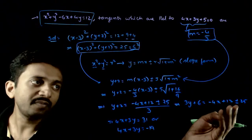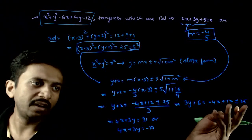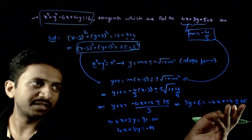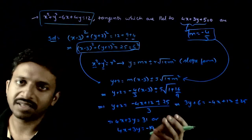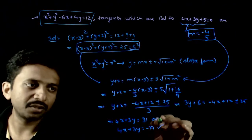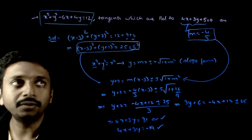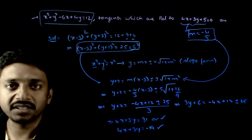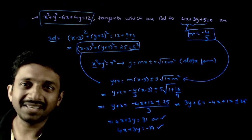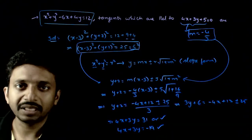If you do plus 25: 12 plus 25 is 37, minus 6 is 31. If you do minus 25: 12 minus 25 is minus 13, minus 6 is minus 19. So these are the two tangents which are parallel to 4x plus 3y plus 5 equals 0 to the circle x squared plus y squared minus 6x plus 4y equals 12. Thank you.